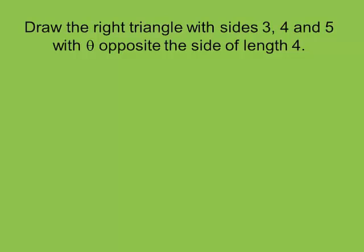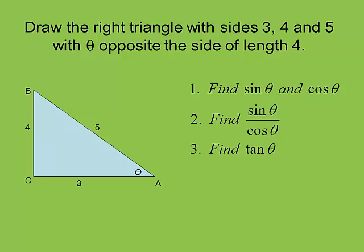Let's move on to the tangent and cotangent identities. I'm going to set this up by asking you to draw a right triangle with the Pythagorean triple 3, 4, 5 as the sides. Obviously the 5 is the hypotenuse. Identify angle theta, and make sure it's opposite the side that has a length of 4. Notice theta is across from the 4. We're going to find the sine and the cosine, divide sine by cosine, and compare that to the tangent.